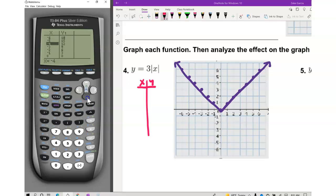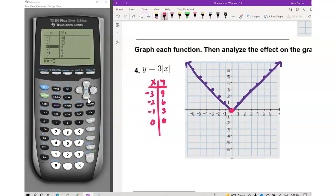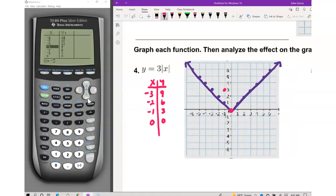I'm going to start at negative 3. Negative 3 gives 9, negative 2 gives 6, negative 1 gives 3, 0 gives 0. So I have the points: 0 comma 0, negative 1 comma 3, negative 2 comma 6, 1 comma 3, 2 comma 6. I'll plot these points to graph the function.